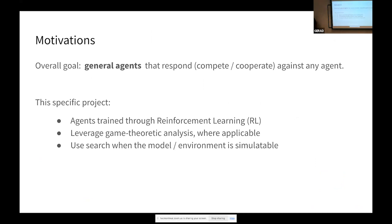So some motivations for this work. Overall, what we want to do — and this is a very broad and general statement — is that we want to find general agents. That's like my life goal: to design general agents that can respond generally, act in a way that generalizes across different tasks, different games, different environments, and with different types of other agents, like people maybe. That's the broad general role.